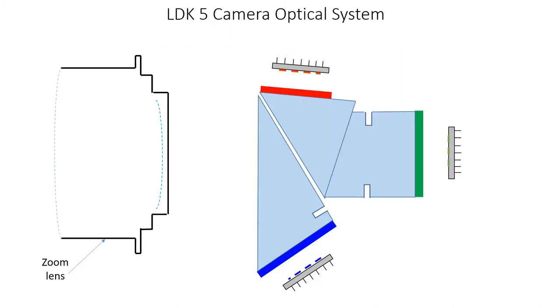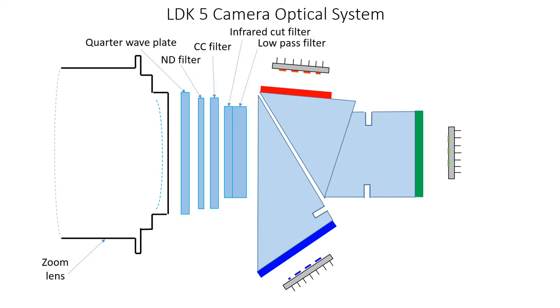The LDK5 camera optical system was state-of-the-art technology at the time it was introduced. On the left is the zoom lens and on the right is the optical splitter block which separates the incoming light into the three primary colors red, green and blue. Between the zoom lens and the optical block are a number of light filters. The ND or neutral density filter is used to reduce excessive light levels and can be switched in by the camera operator. Also included is a color correction filter and an infrared filter. The quarter wave plate is part of the zoom lens.